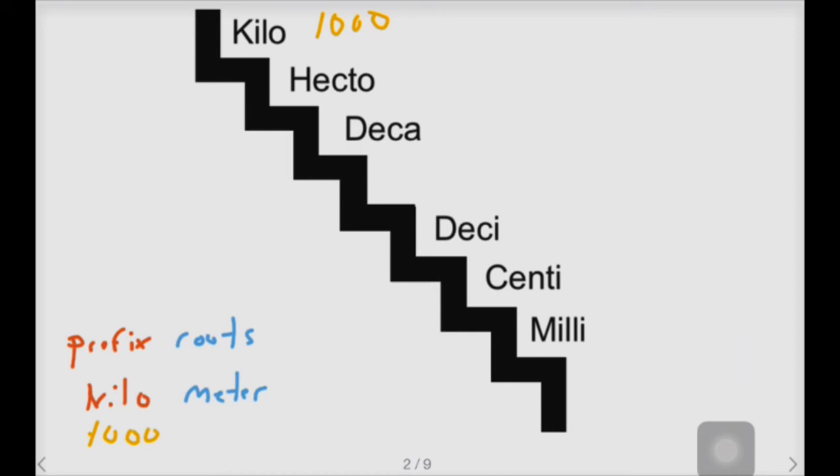Now the staircase you'll notice a pattern here. Kilo is a thousand. Hecto is a hundred. Deca is ten. Deci is one-tenth or .1. Centi is one-one-hundredth or .01. And milli is one-one-thousandth or .001. And this whole thing could be applied to any combination there.